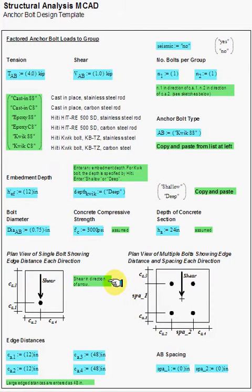This section has options for various anchor layouts. Common configurations are one anchor, a pair of anchors, and four anchors in a 2x2 pattern. You can also use a 2x3 pattern, 3x3 pattern, and so on. There are options for bolt spacing each way and distance to the edge of the concrete.